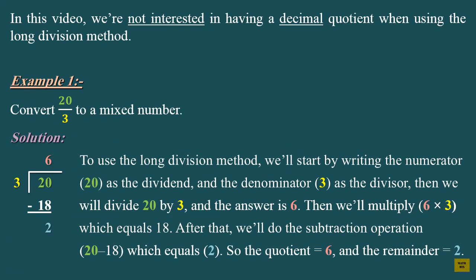In this video, we're not interested in having a decimal quotient when using the long division method. Example 1: Convert 20 over 3 to a mixed number. To use the long division method, we'll start by writing the numerator, 20, as the dividend.